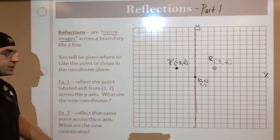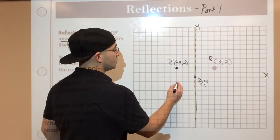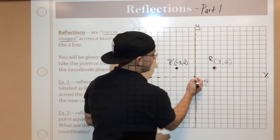Next example here. Let's reflect the same point across the X-axis. So let's use this point again, right? I'll just make it a little darker. Now I want to reflect it across the X-axis.